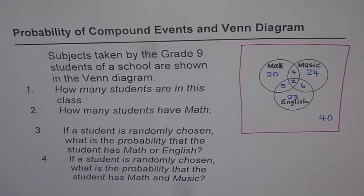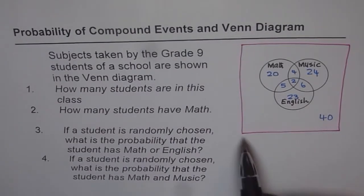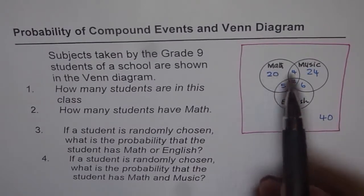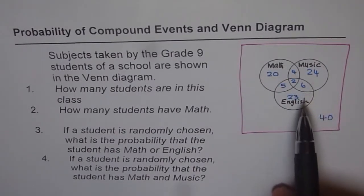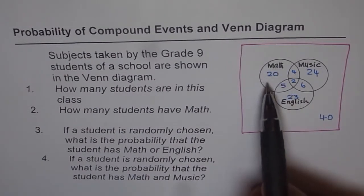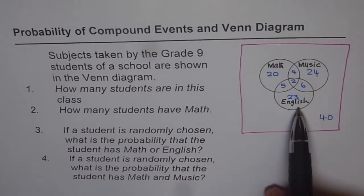Here is a very interesting question relating probability of compound events and the Venn diagram. Data is given in the form of a Venn diagram shown on the right side. These three circles give you the number of students for each subject: maths with 20, music with 24, and English with 23.